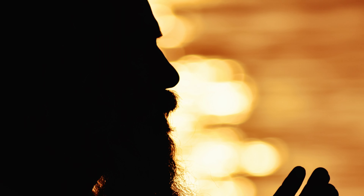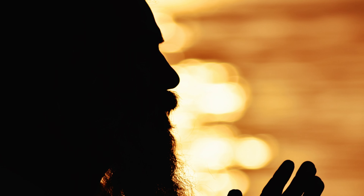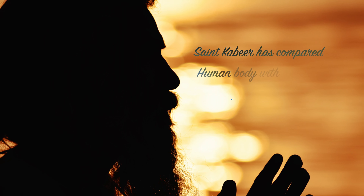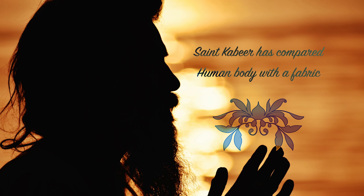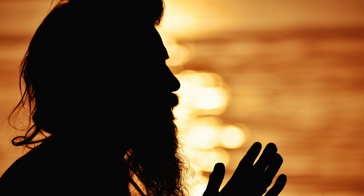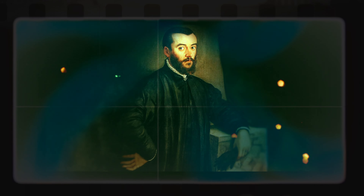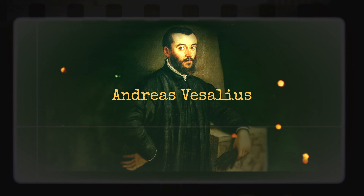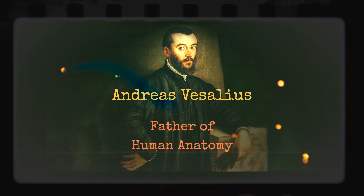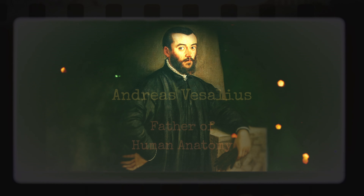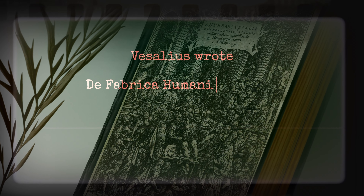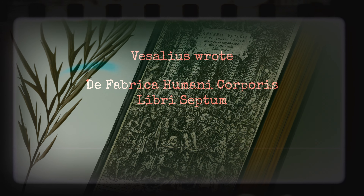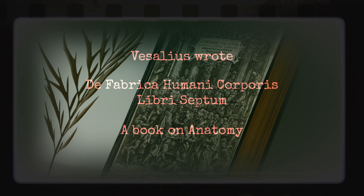Kabir compared the human body with chadriya, meaning a fabric. In the 16th century, there was a Flemish genius, a Belgian scientist named Andreas Vesalius. Vesalius also compared the human body with fabric. He wrote the first book of human anatomy, De Fabrica Humani Corporis Libri Septem, meaning 'the fabric of the human body,' in seven volumes.